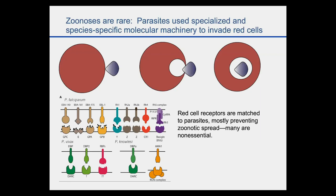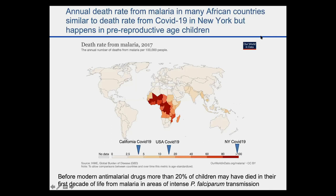There are many different receptors expressed in the parasite with different ligands on the red cells, and you need to change both to get a successful infection. The annual death rate for malaria in many African countries is actually similar to the death rate from COVID-19 in New York. But the big difference is that malaria deaths typically happen in pre-reproductive age children — it's estimated that before modern anti-malarial drugs, more than 20% of children would have died in their first decade of life from malaria, having been exposed to over 700 infectious mosquito bites each year.